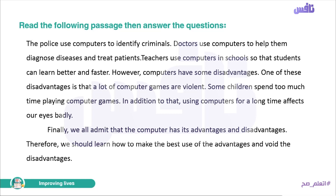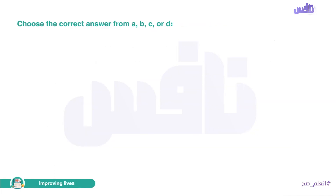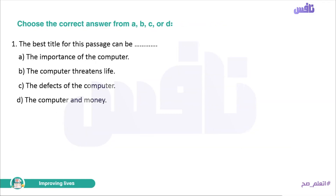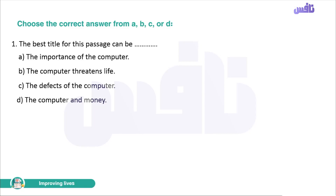Now dear students we're going to answer the questions. Choose the correct answer from A, B, C, or D. Number one: the best title for this passage can be — 'The importance of the computer', 'The computer threatens life', 'The defects of the computer', or 'The computer and money'. The text did not focus only on money or only on defects, so the answer is letter A: 'The importance of the computer.'